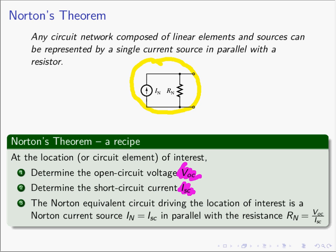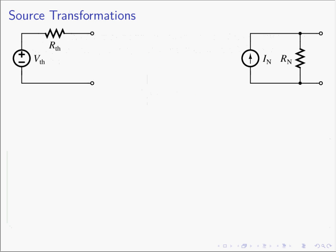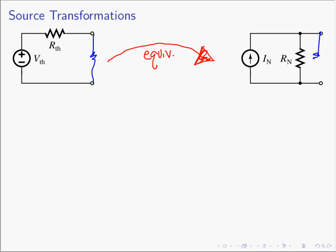Since the Thevenin and Norton equivalent circuits are so similar, let's look at the two template circuits — the Thevenin equivalent circuit on one side and the Norton circuit on the other — and see if we can find a way to transform one into the other. If I'm given a Thevenin circuit, can I come up with an equivalent Norton circuit? If they're going to be equal, they must behave the same way for any load value attached.